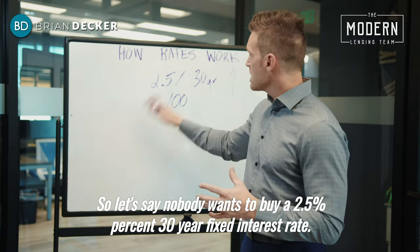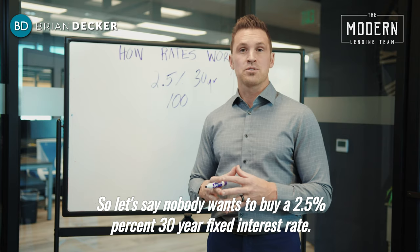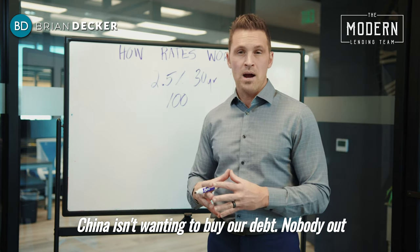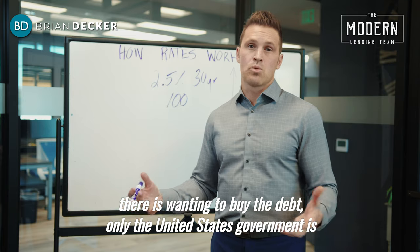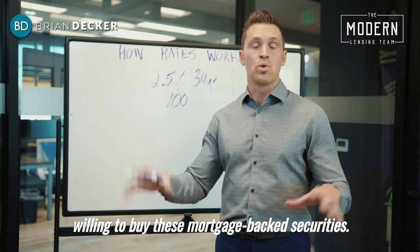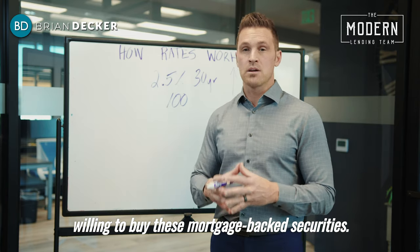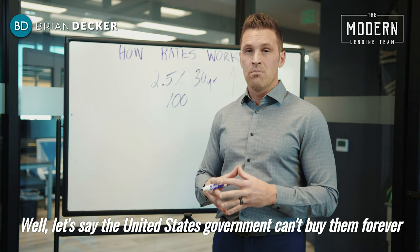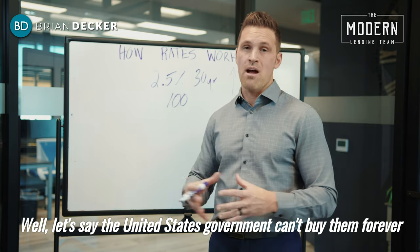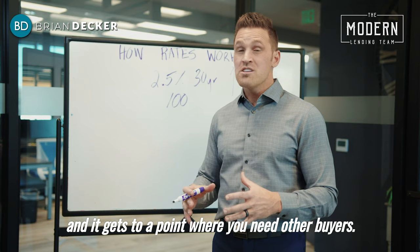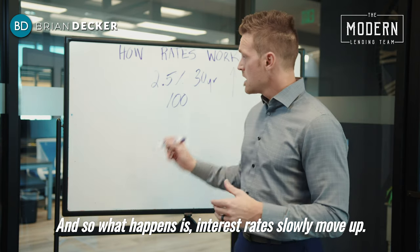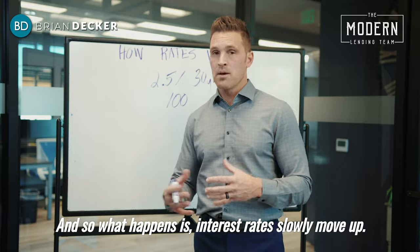Let's say nobody wants to buy a 2.5% 30-year fixed interest rate. China isn't wanting to buy our debt, and nobody out there is wanting to buy the debt — only the United States government is willing to buy these mortgage-backed securities. Well, let's say the government can't buy them forever and you need other buyers. So what happens is interest rates slowly move up.